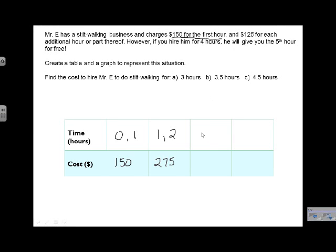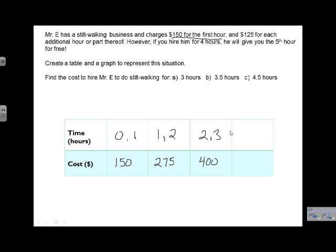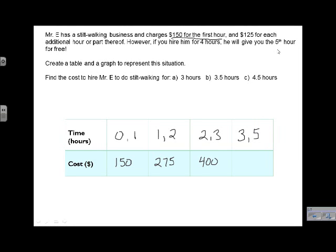What about next? Two to three hours is another $125. So that's going to put you in at $400. And then the next one, normally it would be three to four, but in this case it's three to five, because you get the fifth hour for free. And that would be $525.